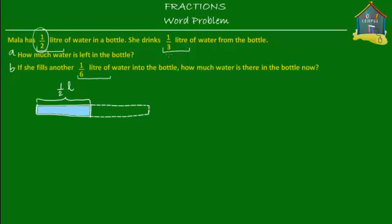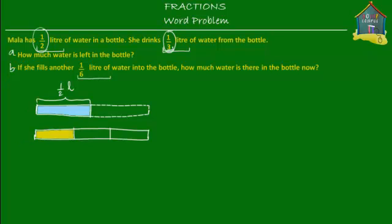Then what she does is she drinks a third of a liter of water from the bottle. How much is a third of a liter? If you have a model for one liter of water and you divide it into three equal parts — three because the denominator here is three — the fraction is one third, and one out of those three parts is a third of a liter. Mala drinks this yellow part, which is equal to a third of a liter.